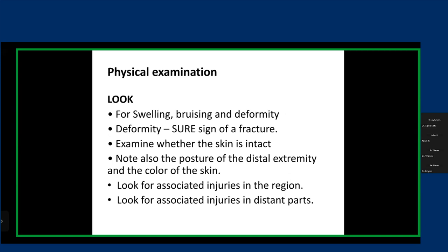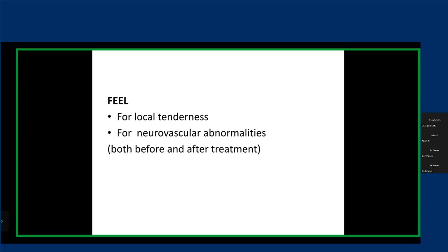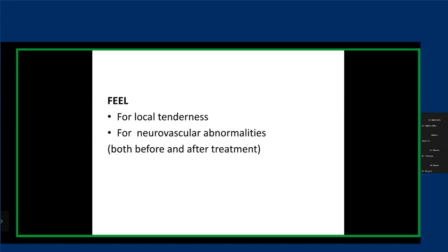In physical examination in orthopedics, we follow the look, feel, and move pattern. We look for any swelling, bruising, any deformity — deformity is usually a sure sign of a fracture or dislocation. We examine whether the skin is intact, any color changes to the skin, and any associated injuries. For feel, we check for tenderness and examine the distal neurovascular structures. Please note to examine the neurovascular structures before and after any intervention, because your intervention — especially attempts at reduction or immobilization — could cause neurovascular injuries.